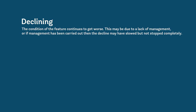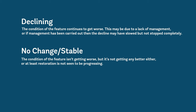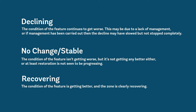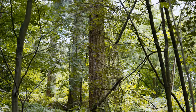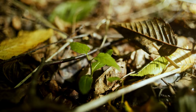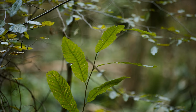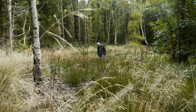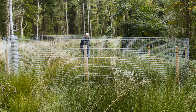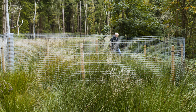Declining: the condition of the feature continues to get worse, which may be due to a lack of management, or if management has been carried out, the decline may have slowed but not stopped completely. No change: the condition isn't getting worse but it's not getting any better, or restoration is not seen to be progressing. Recovering: the condition is getting better and the zone is clearly recovering — relic trees may be responding to additional light, ancient woodland flora may be spreading or re-establishing from seed, and native regeneration may be getting away. You should record the direction of change at every survey, including the first, as it sets the baseline for all future work.